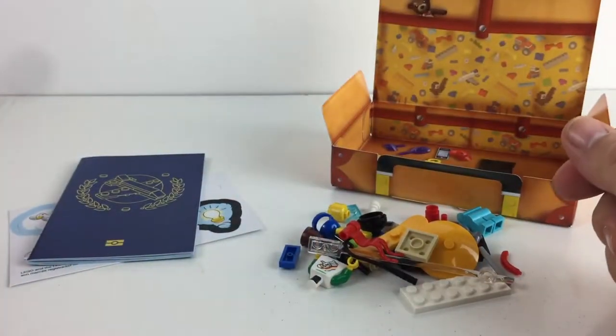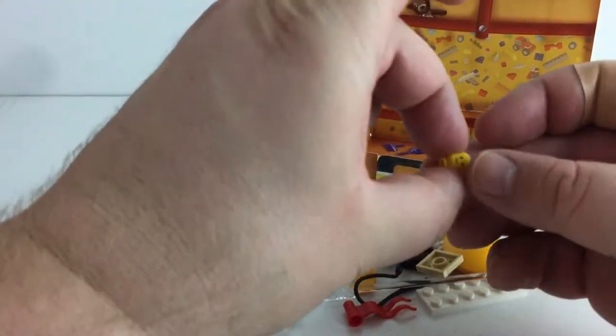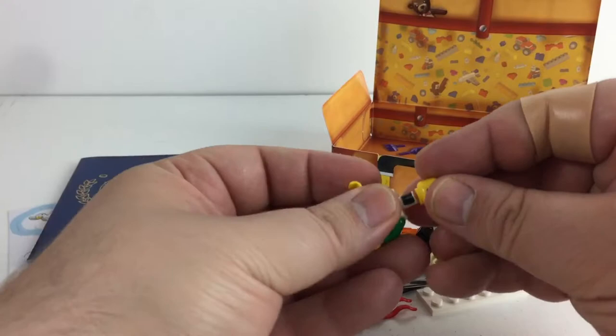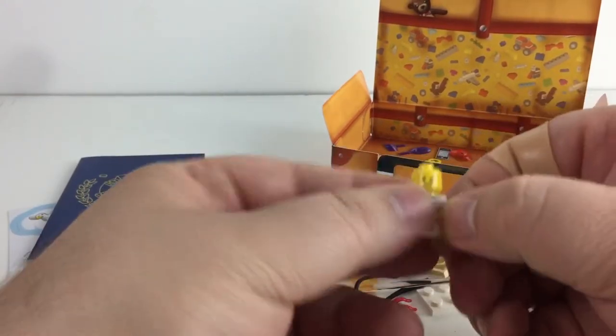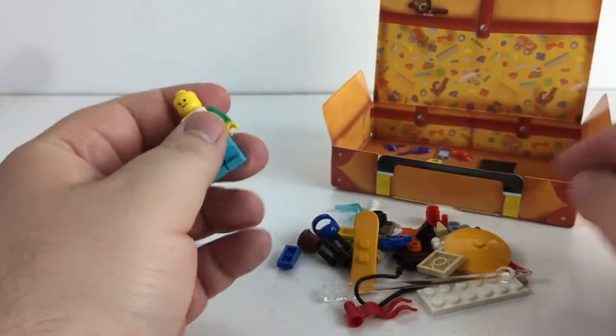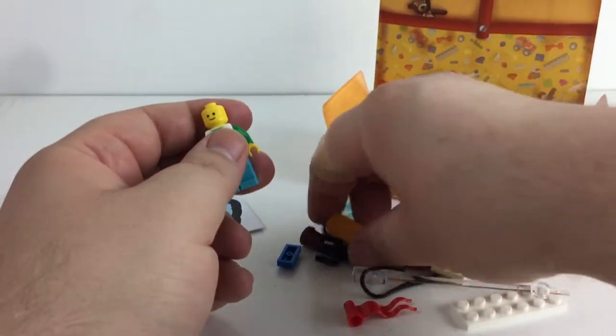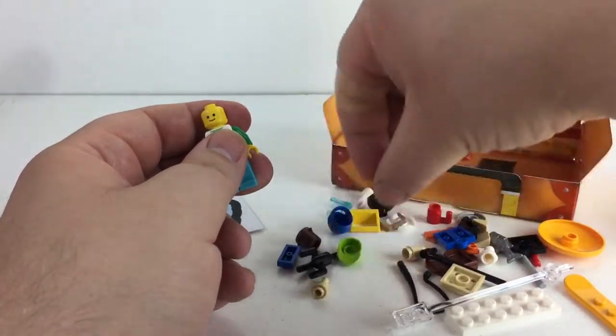Look at all of his pieces. This is an amazing set—it's 41 pieces. All right, let's get him, let's get the little minifigure together. He's just got a basic Lego smiley face, some bright blue pants, and this bright green baseball cap.